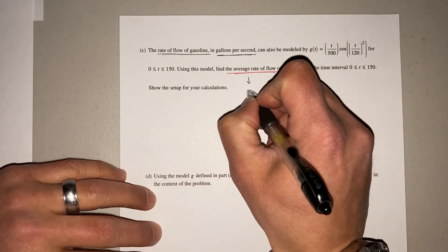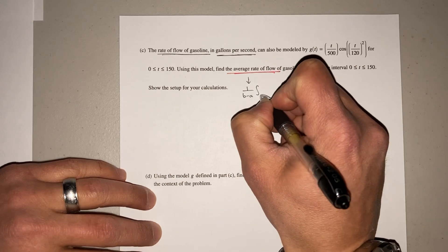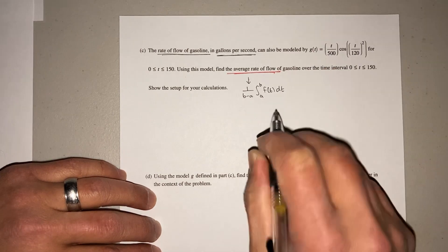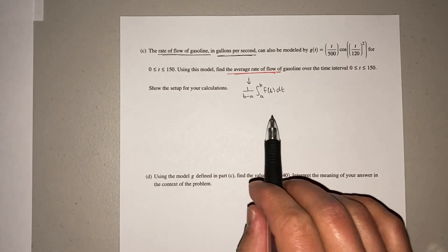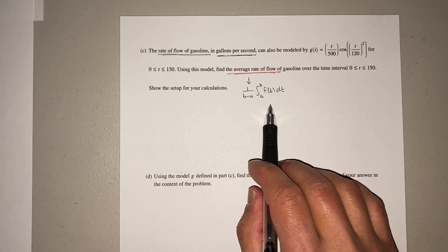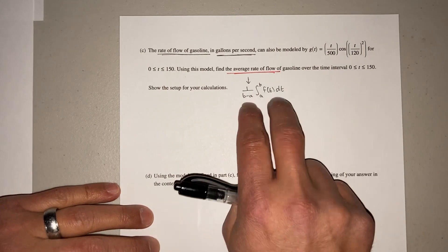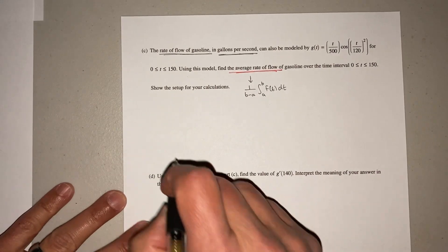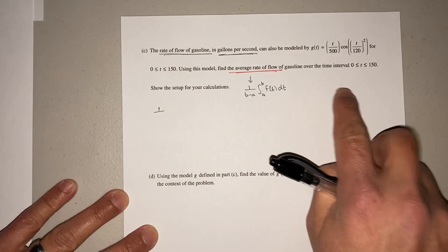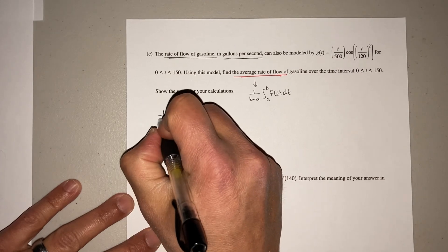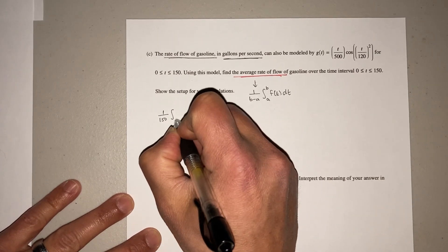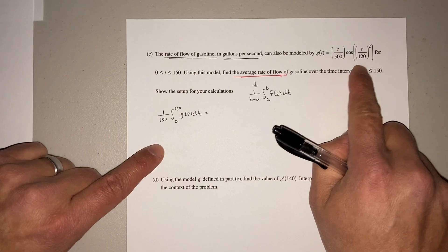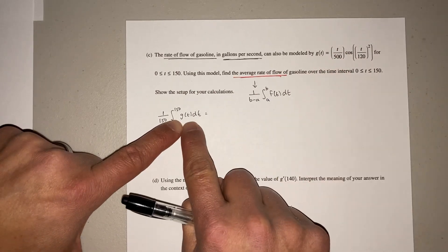So this is your average value. So it's one over B minus A, the integral from A to B. You can say, let's just F of T, dT. In this case, it's going to be G of T. But that's what you're basically finding, the average value formula. They ask this a lot. So make sure you're ready for that one. So what we're going to do, we have to set up. We're going to write one over, that's your A and your B, 150 minus zero is 150, the integral from zero to 150 of GT, dT. You don't have to rewrite this whole thing because they tell us GT equals this. So I'm just going to put GT.